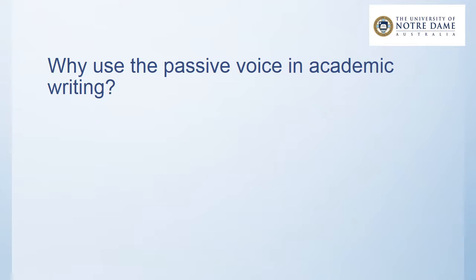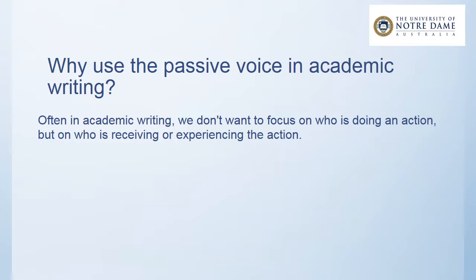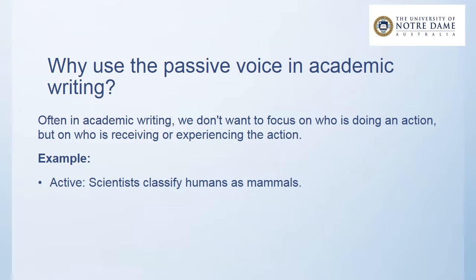So why do we use the passive voice in academic writing? Often in academic writing, we don't want to focus on who is doing an action, but on who or what is receiving or experiencing the action. This is often where our focus is. For example, here is an active sentence: scientists classify humans as mammals. If we change this to the passive, it becomes: humans are classified as mammals.